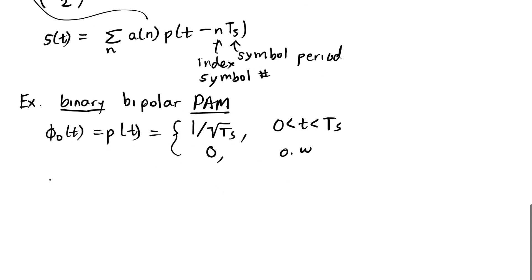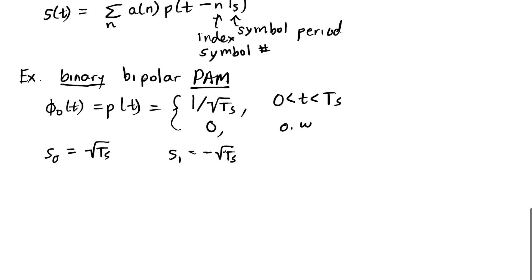I'm going to say that our two symbols, s0, are going to be a and minus a. But I'm going to pick a to be the square root of T sub s and s1 to be minus the square root of T sub s. That gets us so that the amplitude, when I multiply this amplitude A with P of T, I get an amplitude of 1 or minus 1 out of my symbol and my plot looks better. There's no other reason I chose that square root of T sub s.